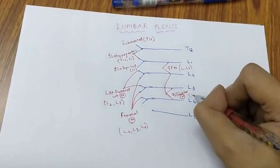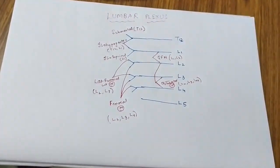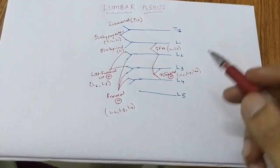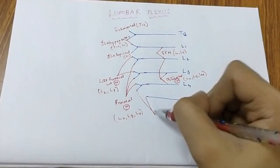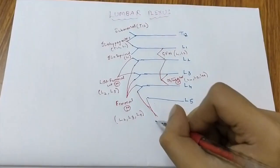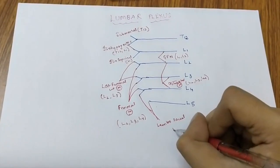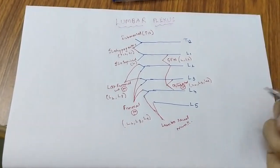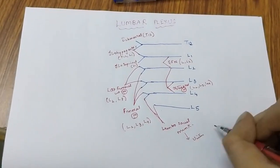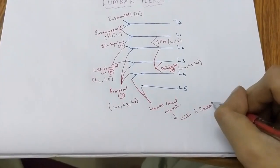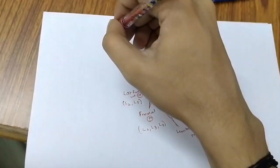The obturator nerve is L2, L3 and L4. The remaining lower portion of L4 and L5 together form the lumbosacral trunk, and this unites with the sacral plexus.